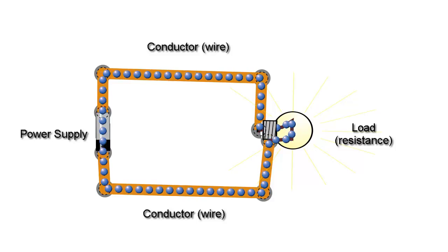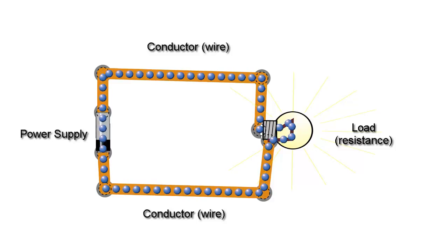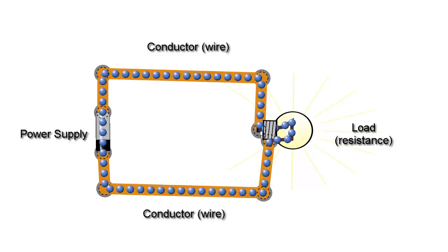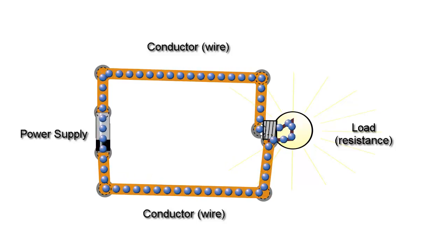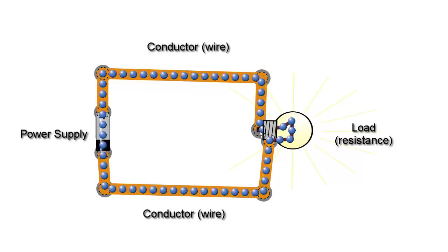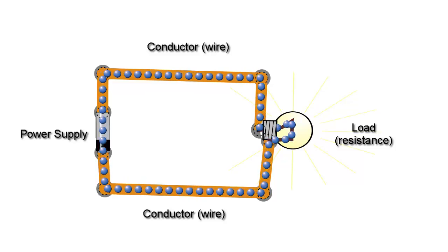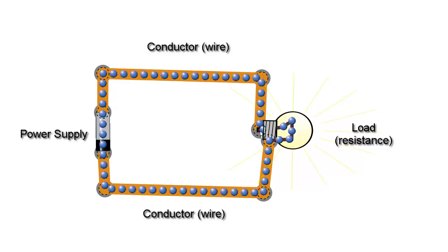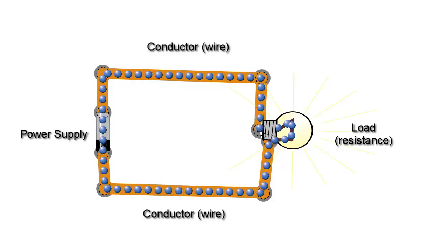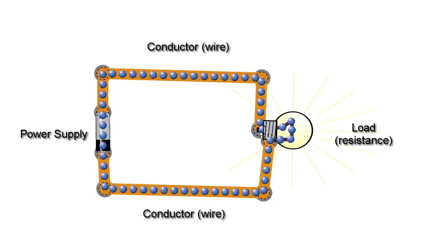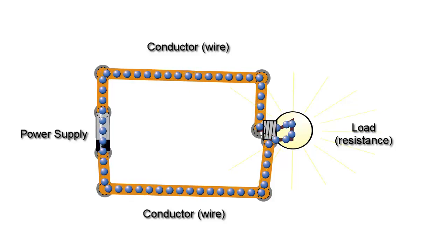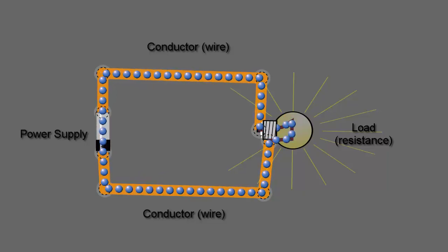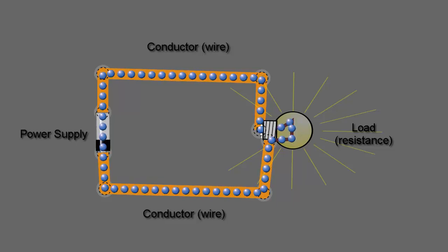All right, the reason we use the light bulb here for a load is because with a light bulb you can sort of see what's going on. If we use a device called a resistor, you really wouldn't be able to tell what was going on in the resistor because the resistor doesn't glow or do anything to give you an indication of what's going on. I'm going to change the background color here to something darker just so you can see the bulb while we do some other experiments here. Okay, so here you see a little darker background that helps you see the light bulb a little bit better.